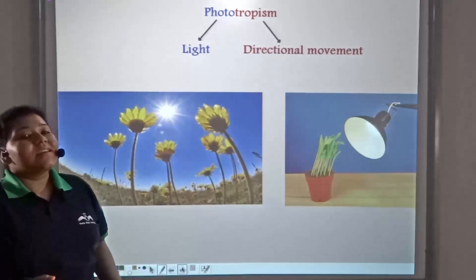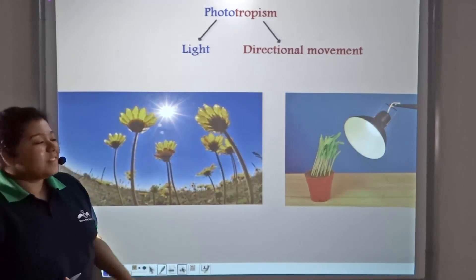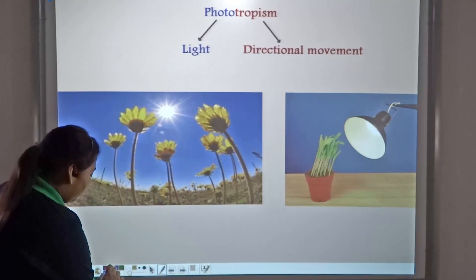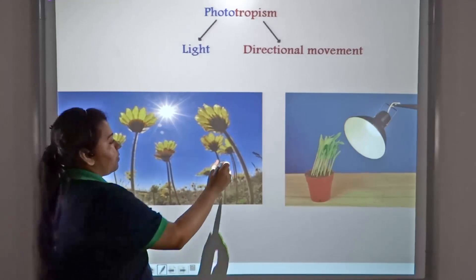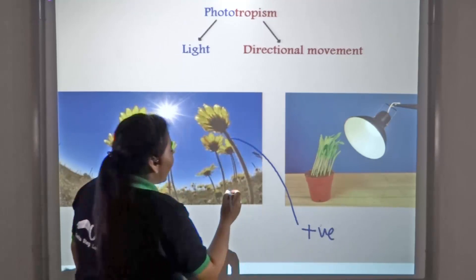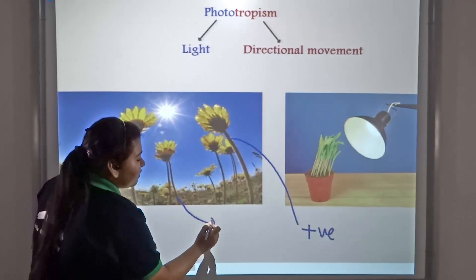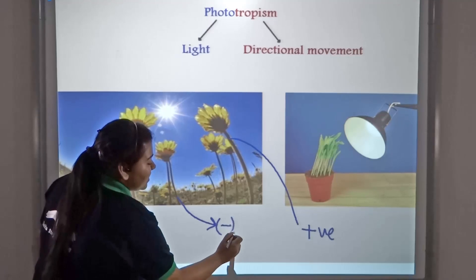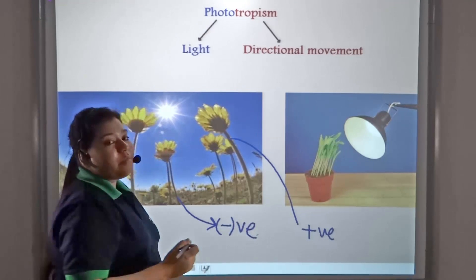From these pictures, you can easily understand that shoots are positively phototropic and roots are negatively phototropic. That is, they grow away from the sunlight.